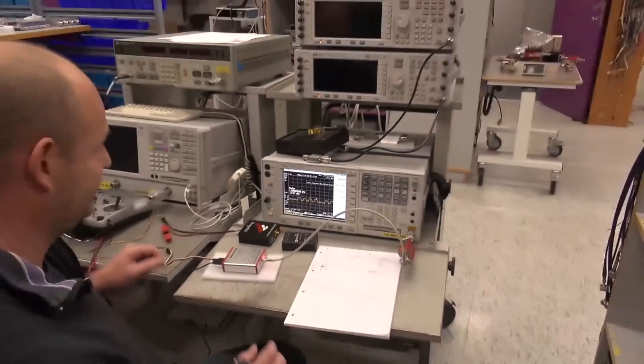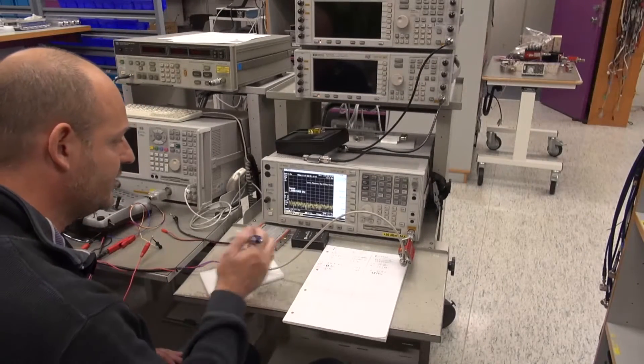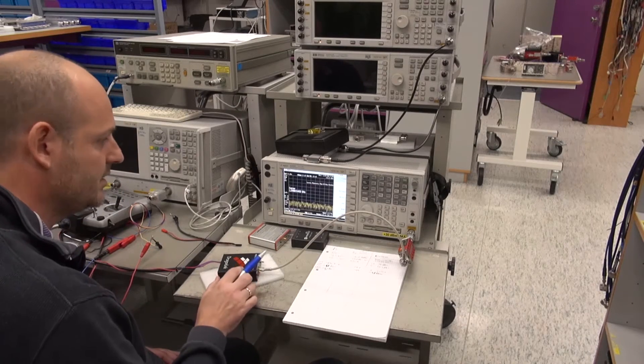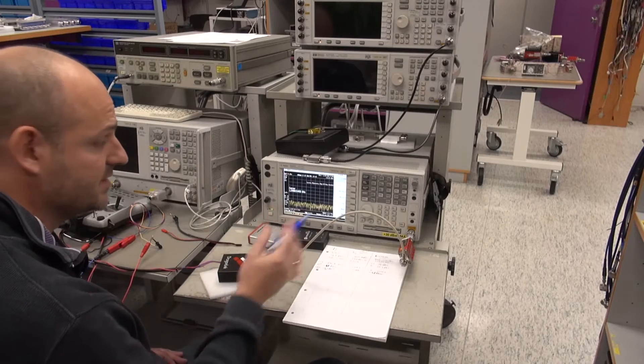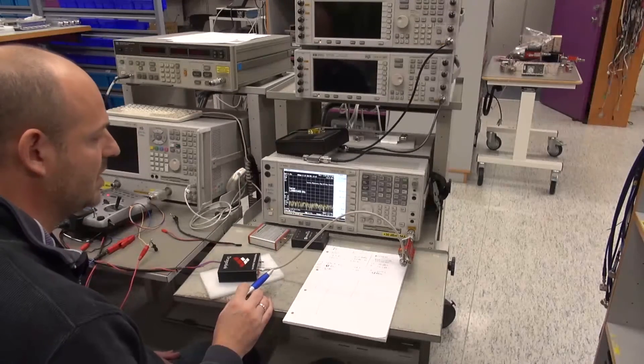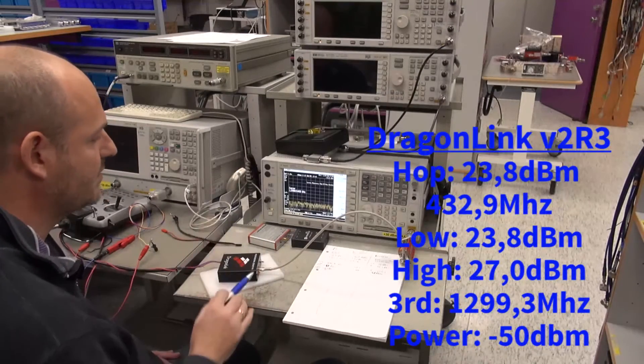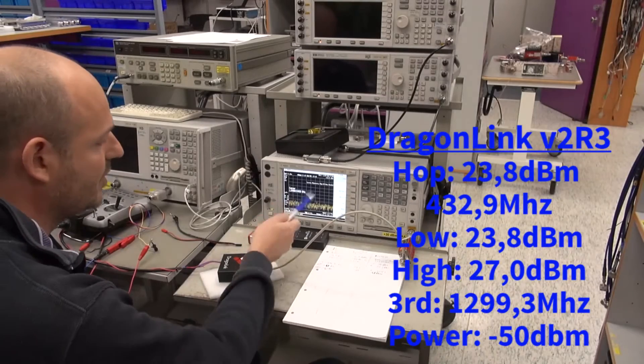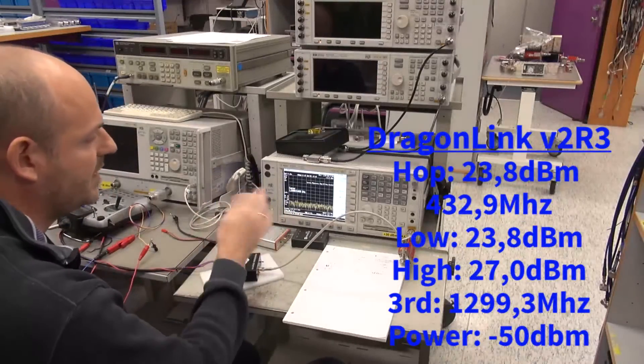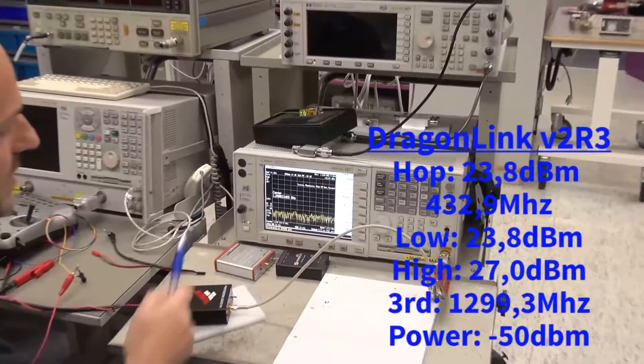We're still doing the harmonics test of the three different UHF systems. This one is the Dragon Link and we did exactly the same. Now I'm powering up the system. After a few seconds this system will boot up and start to frequency hop. As I'm looking at the third harmonic, you'll see a tiny little spike every now and then when it hits the zoomed in frequency.